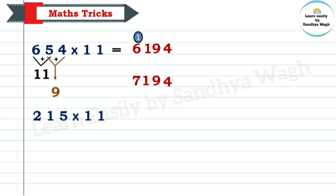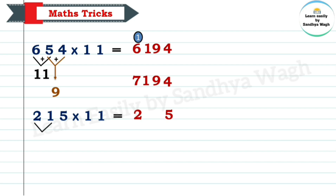Let's see one more example of a 3-digit number. We will write 215 multiplied by 11. We will write 2 and 5 — the first digit and last digit of this number — with some space in between. Now, let's add 2 and 1. 2 plus 1 is equal to 3. Let's write 3 after 2. Now, let's add 1 and 5. 1 plus 5 is equal to 6. So, let's write 6 over here. Our final answer is 2365. 215 multiplied by 11 is equal to 2365.